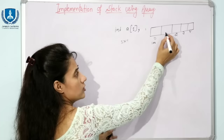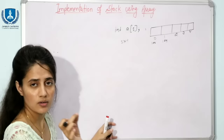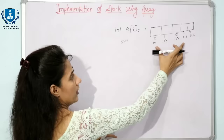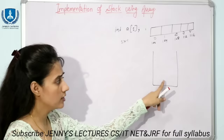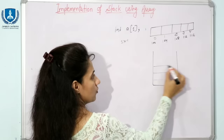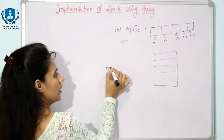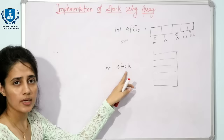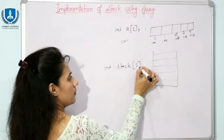Suppose address is 100, so the next block's address is 104 because 4 bytes are used per integer. This is how we represent an array in memory. If you rotate the array, it becomes a logical representation of a stack. Here I am taking the array name as 'stack' with size 5, just for understanding purposes.